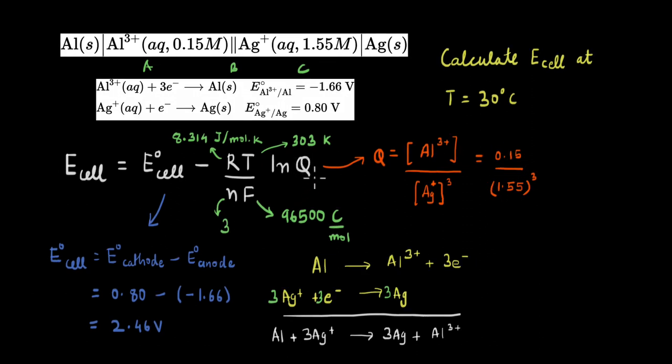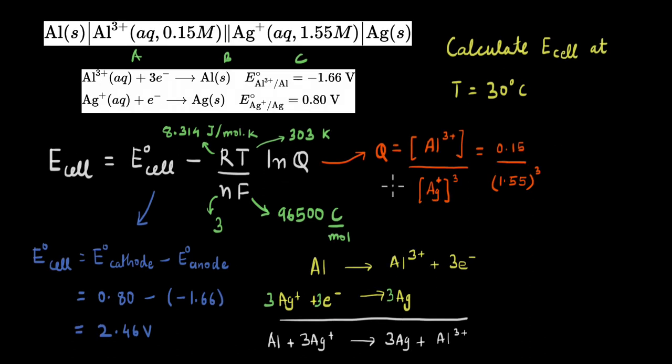Sometimes the value of this ln Q is directly given in the question. In that case, you don't need to write down the half reactions. Also notice that the function here is of natural log, and not log base 10. If you plug in everything into a calculator, and if you haven't made any mistakes in calculation, you'll get the final answer of the cell potential to be 2.49 volts.